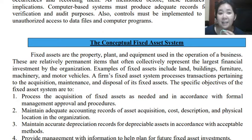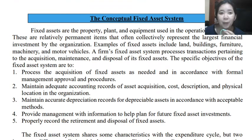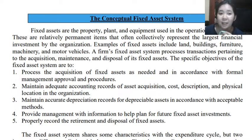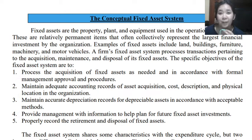The specific objectives of this fixed asset system are: first, to process the acquisition of fixed assets as needed and in accordance with formal management approval and procedures. Second, how to maintain adequate accounting records for asset acquisition, cost, description, and physical location in the organization. Third, how to maintain accurate depreciation records for the depreciable assets in accordance with acceptable methods under generally accepted accounting principles. Fourth, provide management with information to help plan for future fixed asset investment — whether to invest in a new fixed asset or to continue using the old asset and just maintain and repair it. And number five, to properly record the retirement and disposal of these fixed assets.